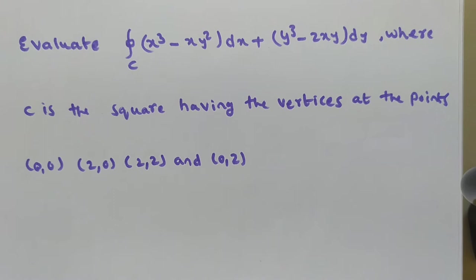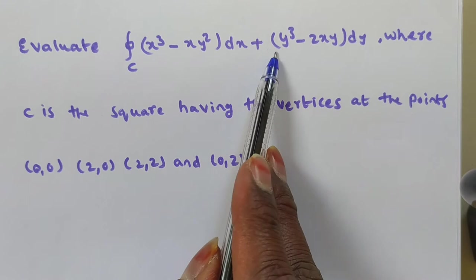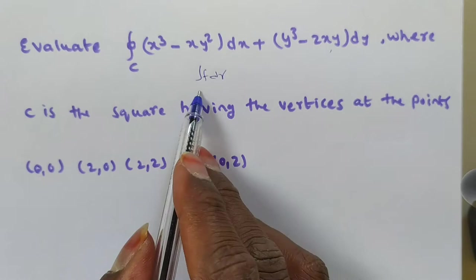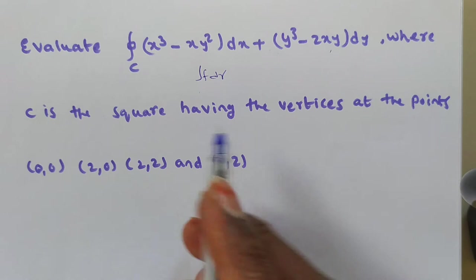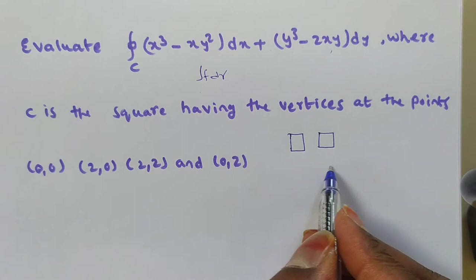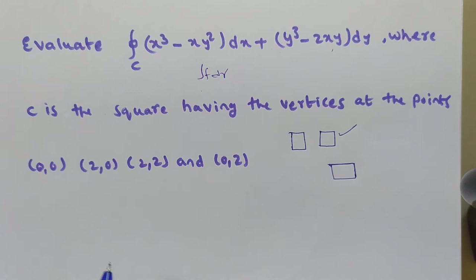Coming to the problem: evaluate the integral over C of F·dr, written as F1·dx + F2·dy. In this case, F·dr is given directly. Here C is a square — in the previous task I gave you a rectangle, but now we will solve the problem on a square.